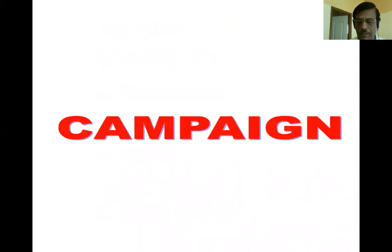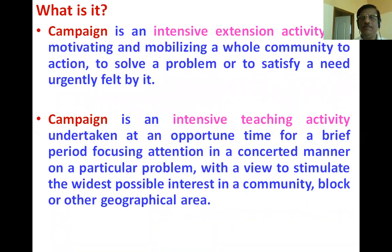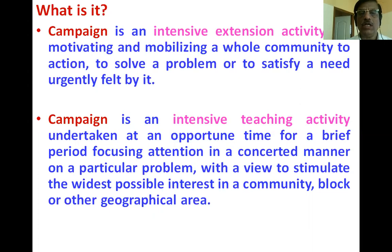Let us see one by one — objectives, procedure, advantages and limitations. First one is campaign. Campaigns are conducted in various situations — you might have heard about election campaign, blood donation campaign, family planning campaign, rat control campaign. The campaign is used for a specific purpose. Campaign is an intensive teaching activity for motivating and mobilizing the whole community to action to solve a problem or to satisfy an urgently felt need.